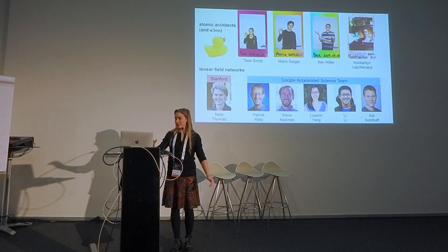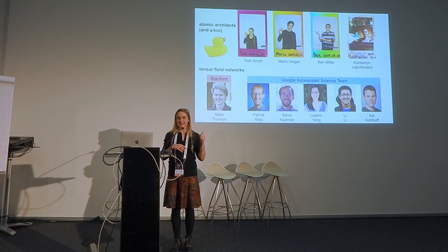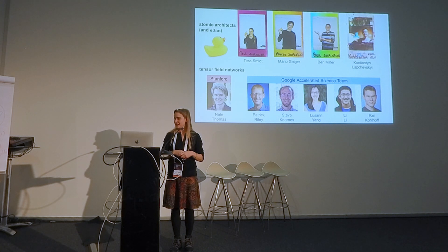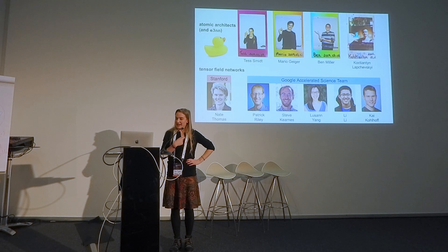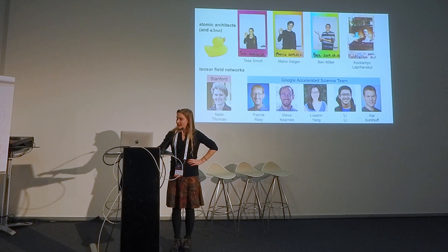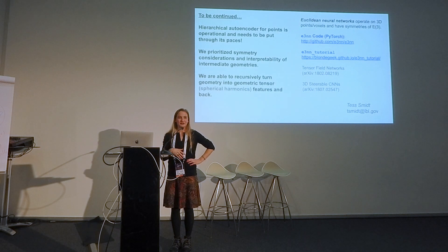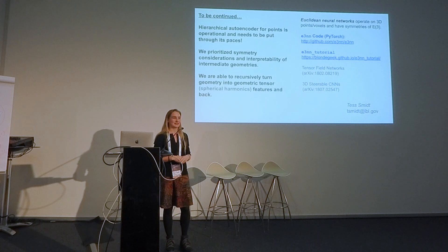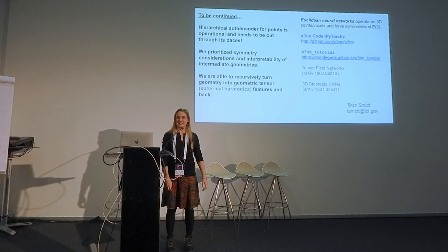Big thanks to my colleagues Mario, Constantine, and Ben in New Zealand — they're developers of the repository we work with, E3NN. Also a big thanks to the TensorFlow Networks team, the paper for equivariant networks I was on while an intern on the Google Accelerated Science team. We have a functional autoencoder and now just need to put it through its paces. We prioritize symmetry considerations and interpretability of intermediate geometries, and we're able to recursively turn geometry into feature vectors and back again.